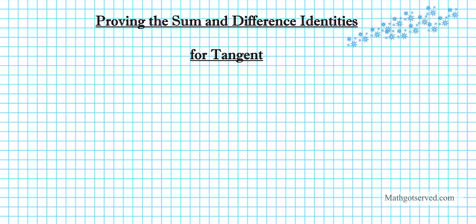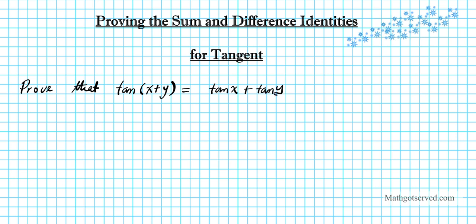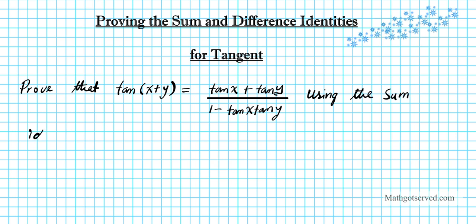Good day students. In this video we are going to be proving the sum and difference identities for tangent. Let's write down the instructions for this example. We are going to prove that tan(x + y) equals tan x plus tan y divided by 1 minus tan x tan y, using the sum identities for sine and cosine.